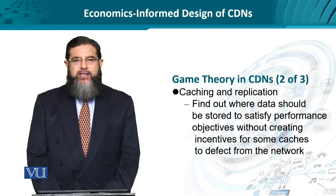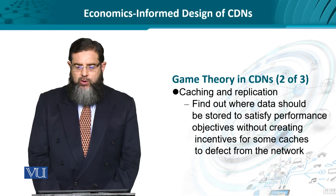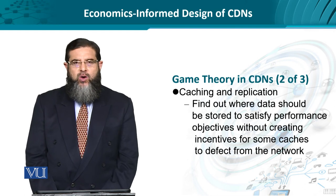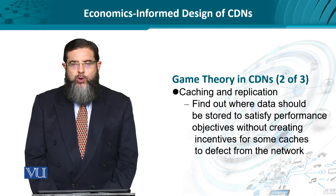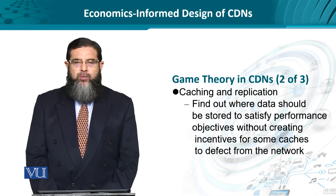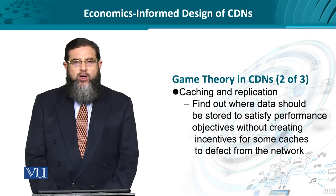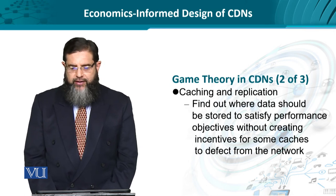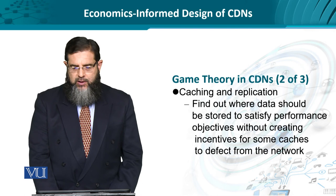Another key issue in CDNs is caching and replication — finding out where exactly data should be hosted, temporarily or permanently, to satisfy certain objective functions. This means increasing the locations where data could be stored, while ensuring existing players storing data do not exit or defect from the network. This is a trade-off requiring problem.